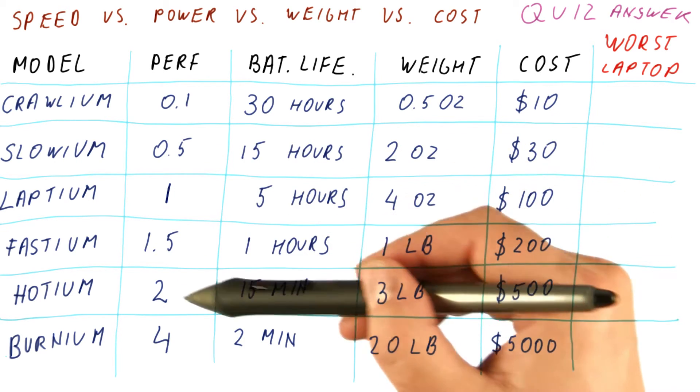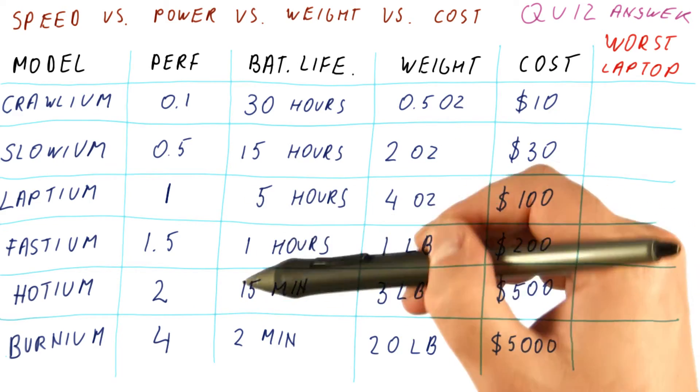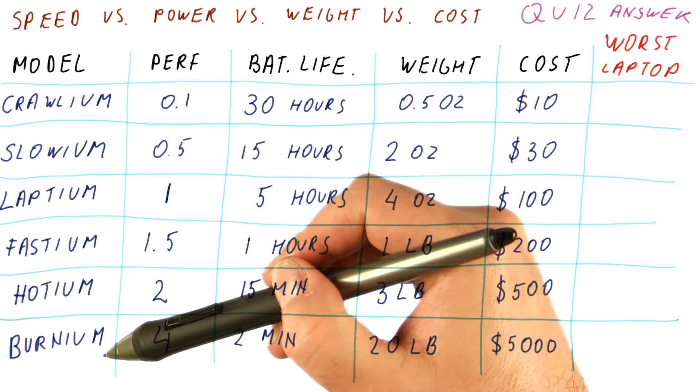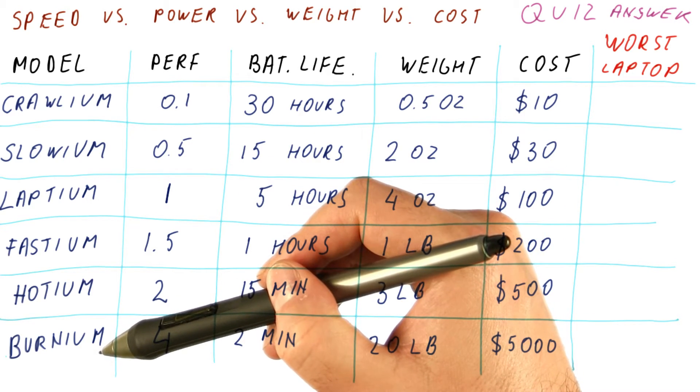So clearly, the designs in the middle are actually better laptop processors than the ones on the extremes. So what we really have to do is decide whether the Crollium or the Burnium is the worst laptop processor.